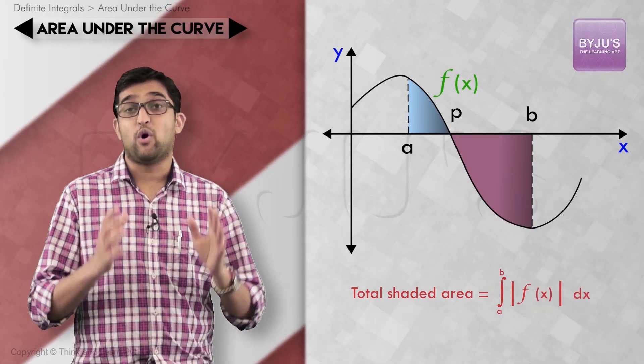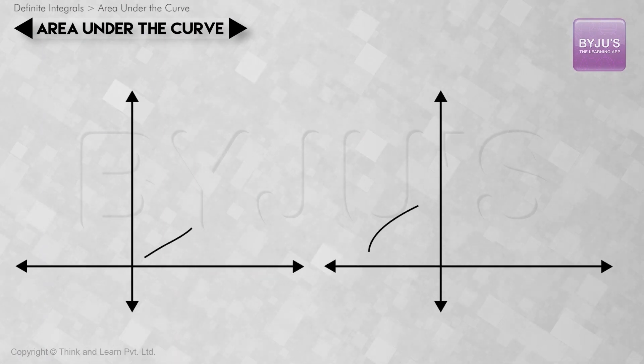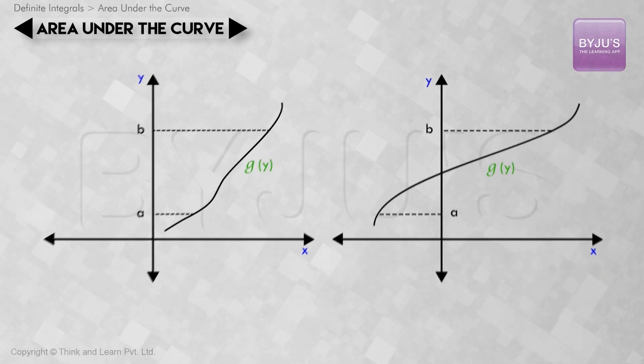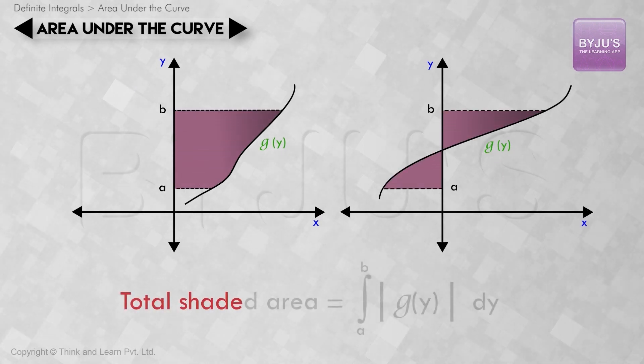Now, we go to the second possibility of finding the area between the plot x equals g(y), y-axis between the ordinates a and b. It would come intuitively to you if you have comprehended the previous case properly. Here, the required area will be integral a to b modulus of g(y) dy.